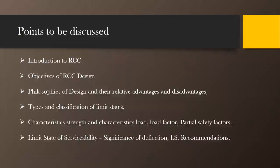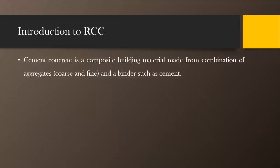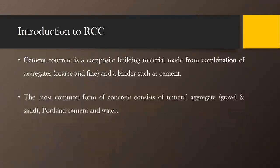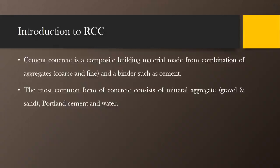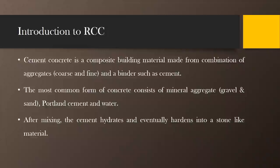Let us begin with the introduction to RCC. Cement concrete is a composite building material made from the combination of aggregates — both coarse and fine aggregates — with a binding material such as cement. The most common form of concrete used in day-to-day life consists of mineral aggregates like basalt, which is available in ample amounts in Maharashtra, along with river sand, Portland cement, and water. We mix all these materials — cement, coarse aggregate, fine aggregate, and water.